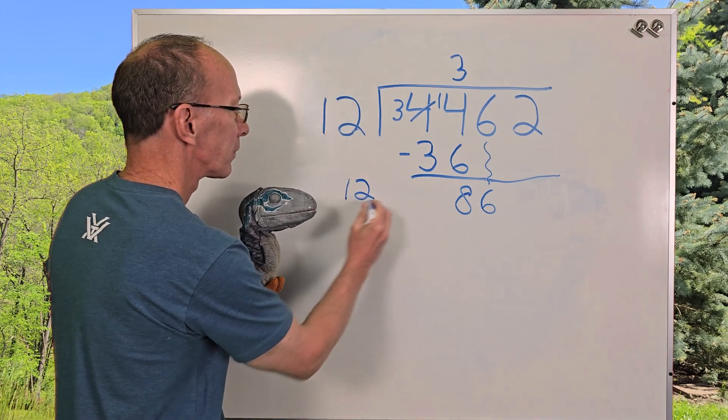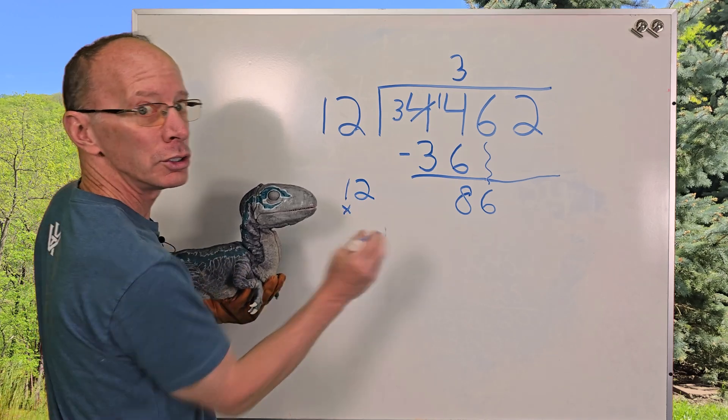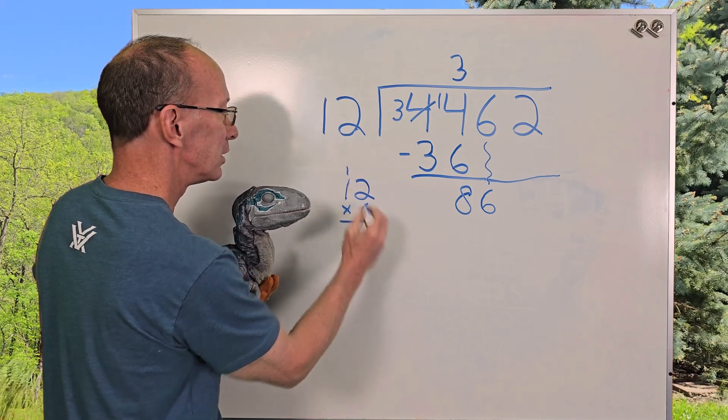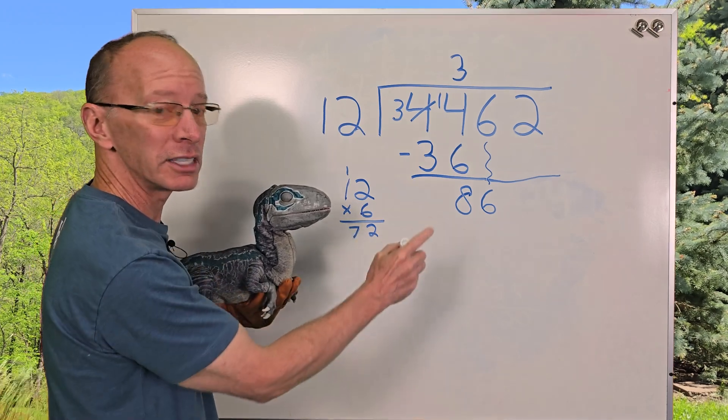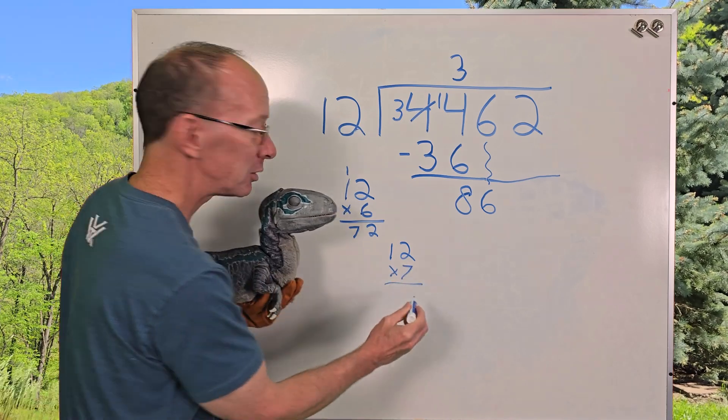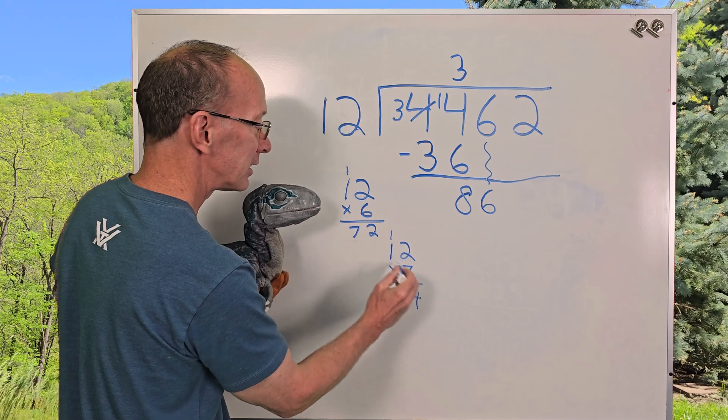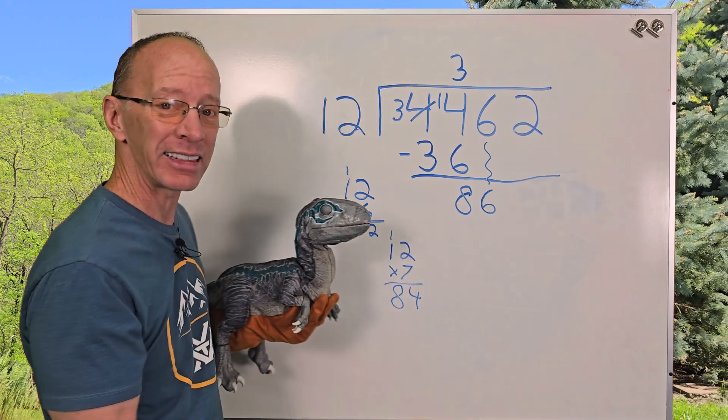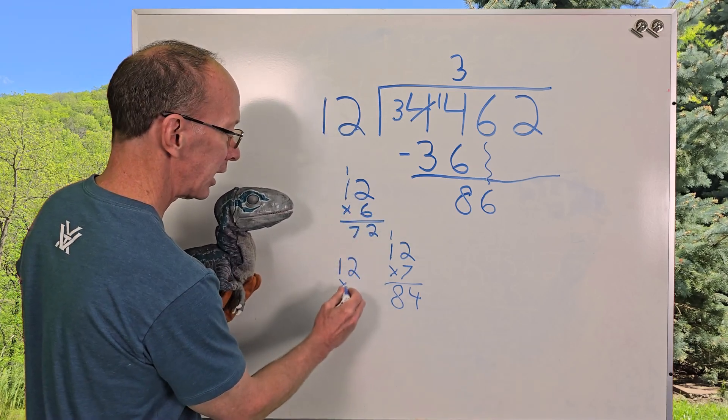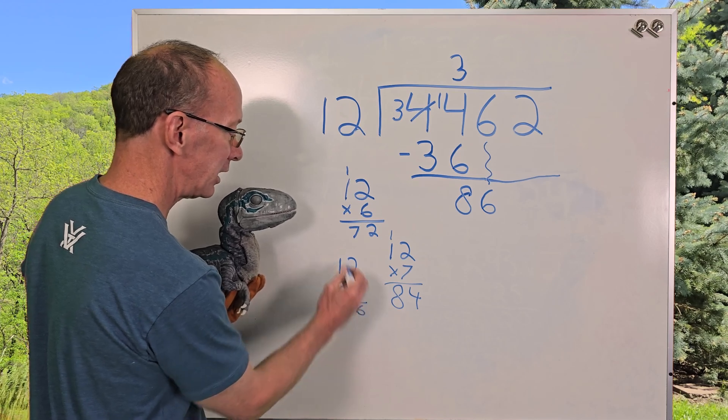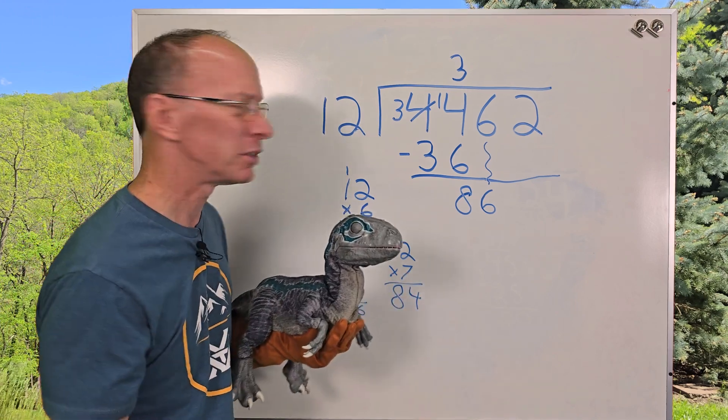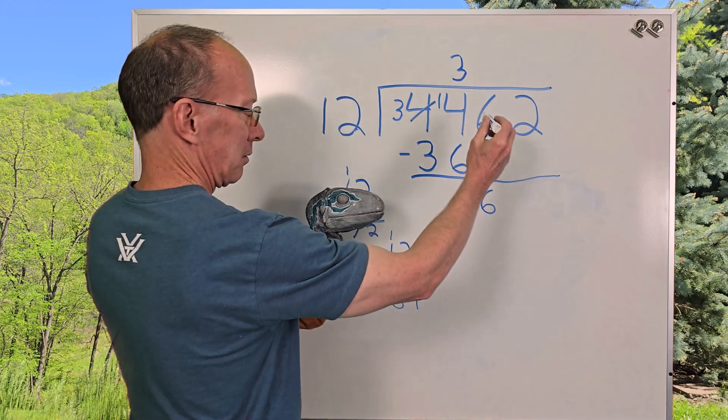So I'm going to take 12 times 6. So 6 times 2 is 12. Carry the 1, 6 and 7. That's really close. Let's see if we can do one more. So I have 12 times 7. So 7 times 2 is 14. Carry the 1, and I got 7 and then 8. I think that's it. I'll show you what 12 times 8 looks like. So here's 12 times 8. And 8 times 2 is 16. Carry the 1 and 8 and then 9. That's too much. So we got to go with 12 times 7. So I'm going to put the 7 right here.